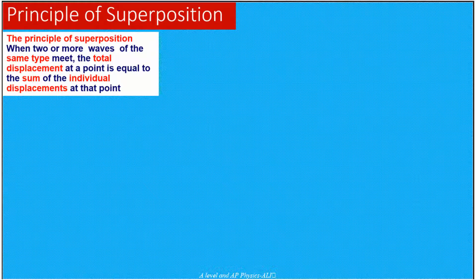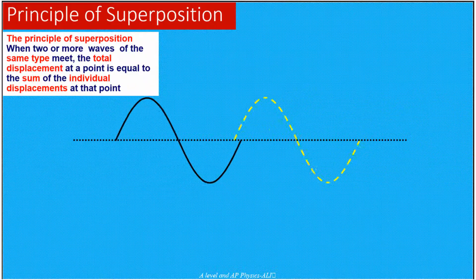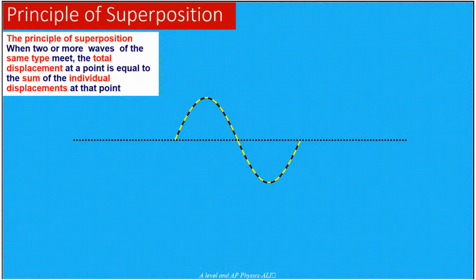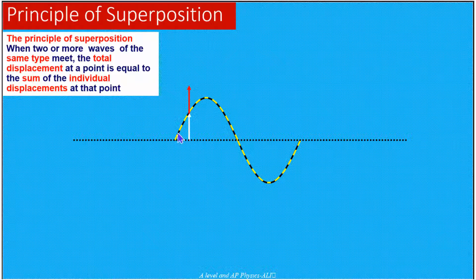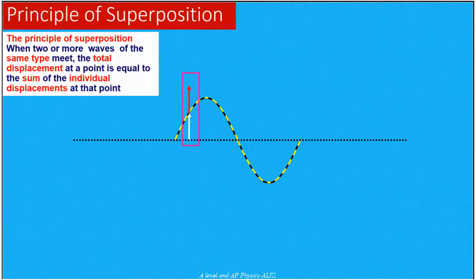Let's try to visualize Principle of Superposition with the help of a simple animation. As you can see here, two waves are approaching from two different directions. At this point, they meet each other. How we can find the resultant wave at this point? Simply, we need to add the individual displacements. For example, at this point these two waves have the same displacement. So now we will just add these two displacements together. They have equal and positive displacements, so we will simply add. We repeat this process for all the points and then connect all the points to get the resultant wave.